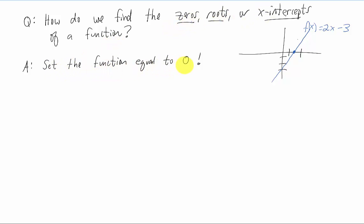And how do we find the zeros, roots, or x intercepts of a function? Well, we set that function equal to 0. In other words, we set y equal to 0. If f of x is 2x minus 3, we set that function equal to 0, and we solve for x. And in this example, I'm getting that the 0 of this function has an x value of 3 halves, and the y value of a 0 is always 0.